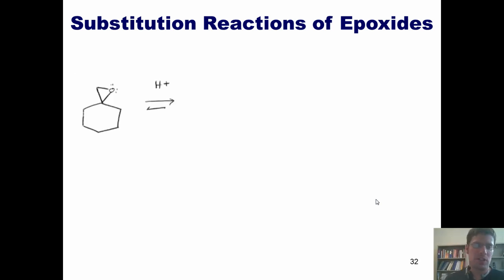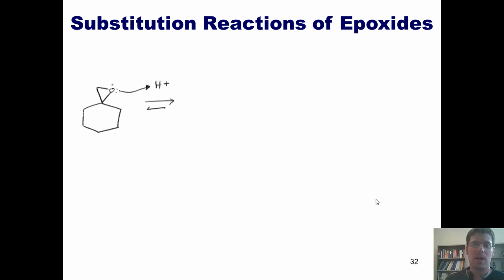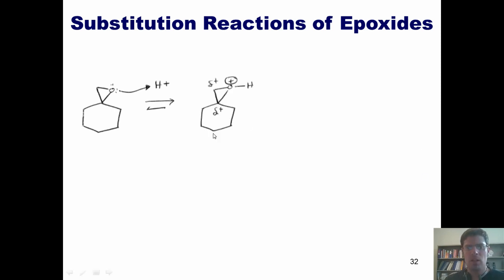Here's our first example. It's been treated under acidic conditions, so the lone pair electrons come out and form a bond with that proton to give a protonated intermediate. I have a partial positive charge building on the carbon up top and the carbon at bottom. Which of those two positive charges is more stable?